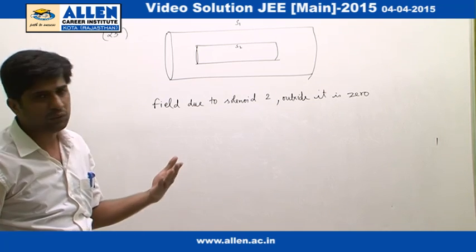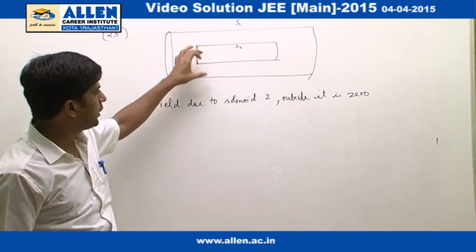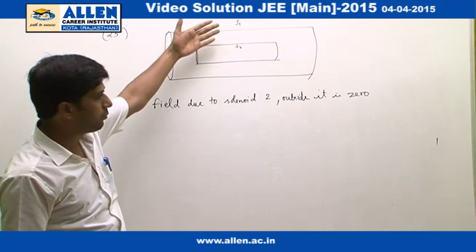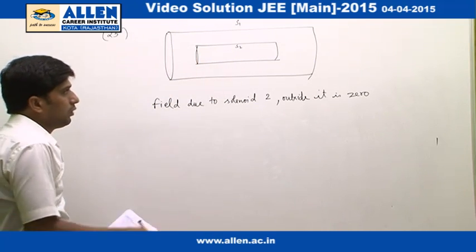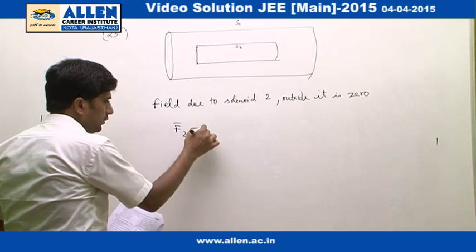As we know, field outside the solenoid is 0, therefore field due to solenoid 2 outside it must be 0, therefore force F2 must be 0.